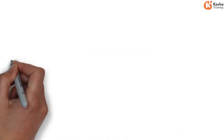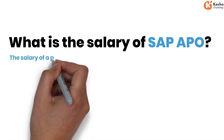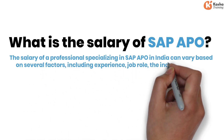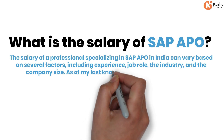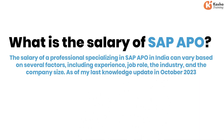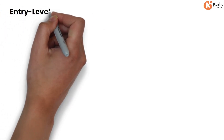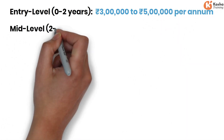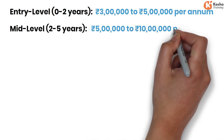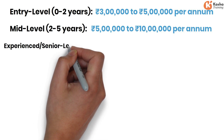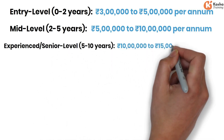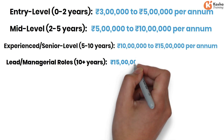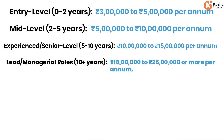The salary of a professional specializing in SAP APO in India can vary based on factors including experience, job role, industry, and company size. As of October 2023, approximate salary ranges are: entry-level (0–2 years) — ₹300,000 to ₹500,000 per annum; mid-level (2–5 years) — ₹500,000 to ₹1,000,000 per annum; experienced/senior level (5–10 years) — ₹1,000,000 to ₹1,500,000 per annum; and lead/managerial roles (10+ years) — ₹1,500,000 to ₹2,500,000 or more per annum.